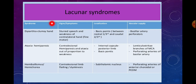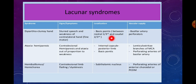An important short note: dysarthria clumsy hand syndrome is a lacunar syndrome where there is slurred speech and weakness of the contralateral hand. The localization is basis pontis and the vascular supply is basilar artery perforators.